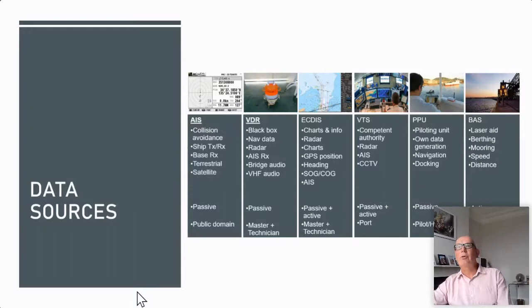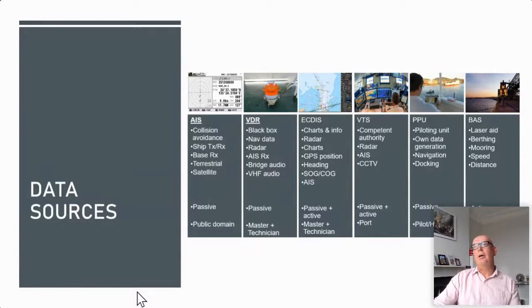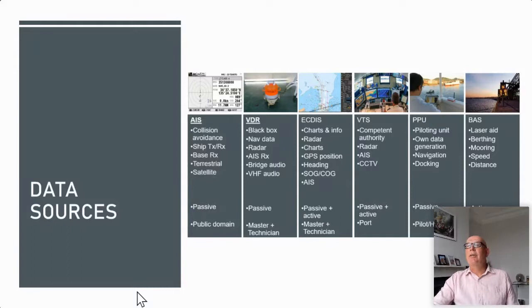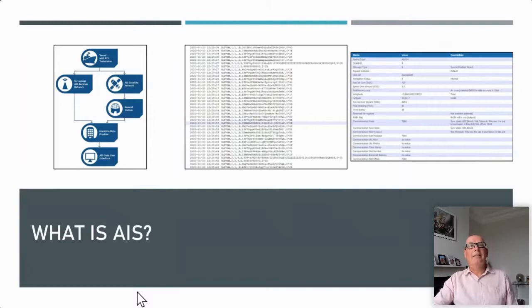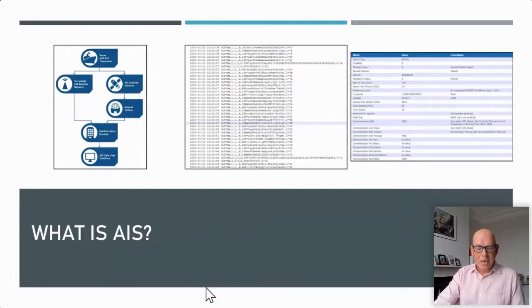The time that data is stored in an ECDIS may well significantly exceed that of the VDR. Data will also be available from VTS — you may get AIS, CCTV, and other radar information from VTS, who would also have access to pilotage units, which the pilot may have gathered from his own independent unit, providing another source of independent data. Berthing assistance systems, again, provide very accurate and very frequent information, which is particularly useful in berthing incidents.